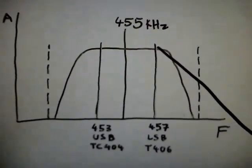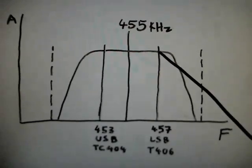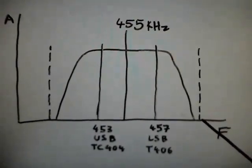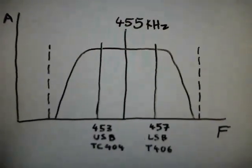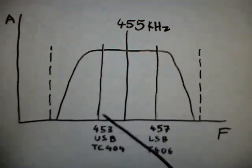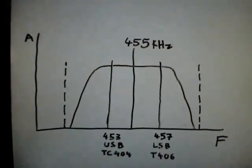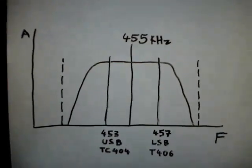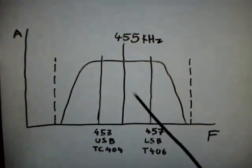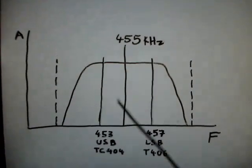Now you will notice that these two frequencies are in the passband of our ceramic filter, within the passband. And this is what causes the receiver to receive the opposite sideband you are trying to receive.